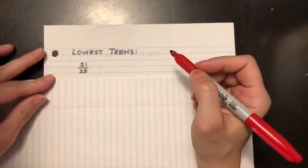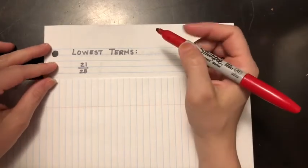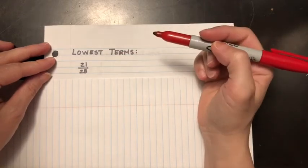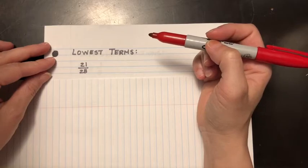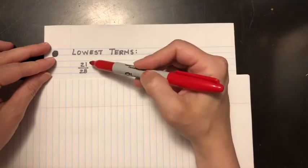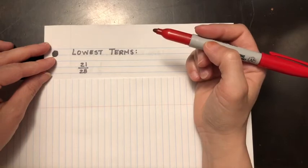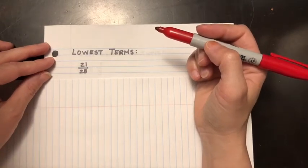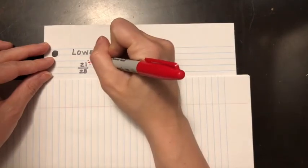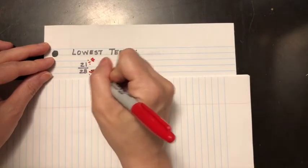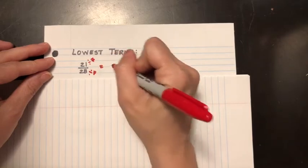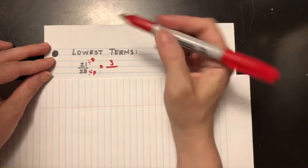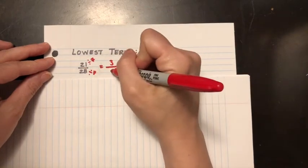Here we have 21 over 28, and I'm going, okay, how can I reduce this into lowest terms? I need to start thinking about my number facts. Does this work for two? Can I divide the top and the bottom by two? No. How about three? It'll work for the top but not the bottom. Four's not going to work, five's not going to work, six is not going to work. Seven? Oh, that'll work. So I'm going to divide the top by seven and the bottom by seven. 21 divided by 7 gives me 3, and 28 divided by 7 gives me 4.